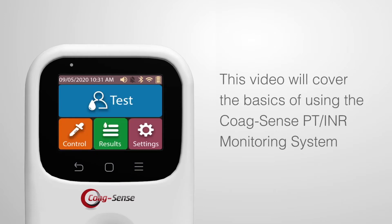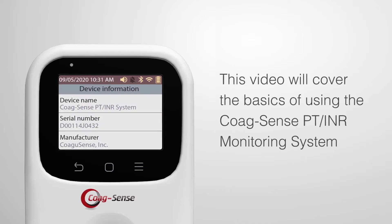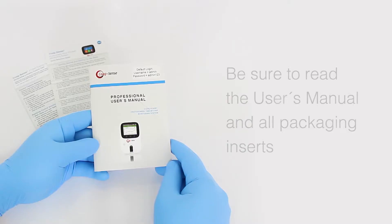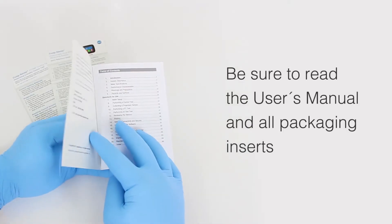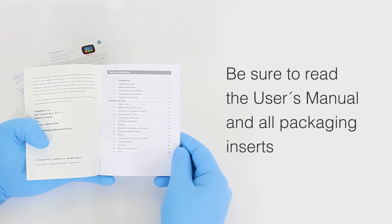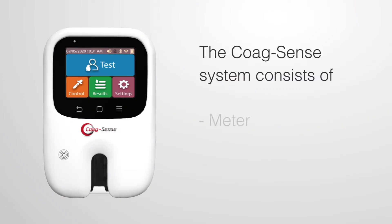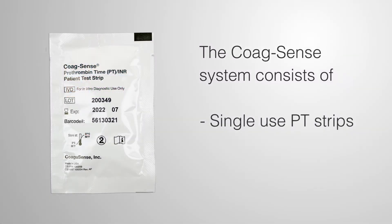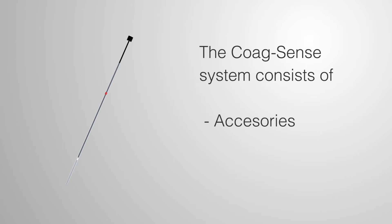This video will cover the basics of using the CoagSense PT-INR Monitoring System. For complete instructions, be sure to read the user manual and all packaging inserts. The CoagSense system consists of a meter, single-use PT strips, control strips, and certain accessories required for testing.